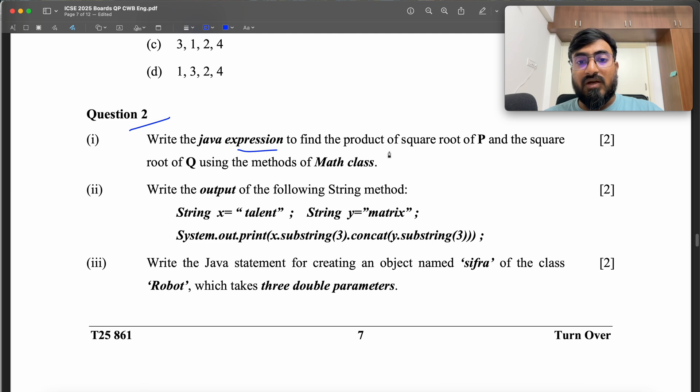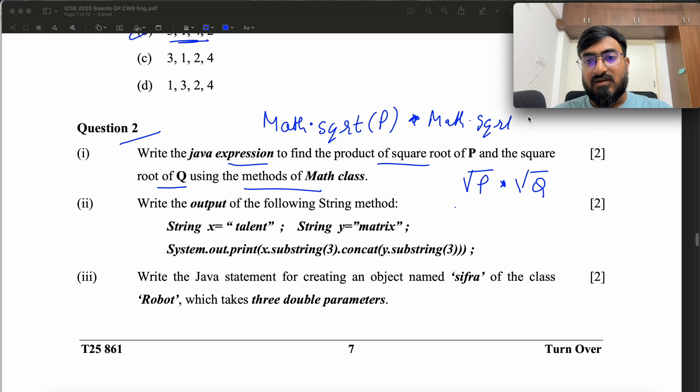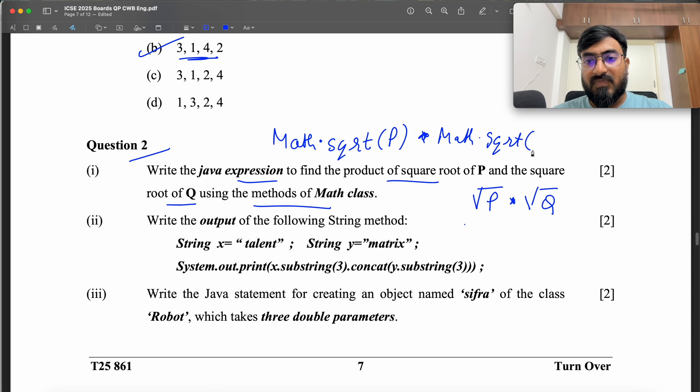It says write the Java expression to find the product of square root of P and the square root of Q using the methods of Math class. Product of square root of P and the square root of Q. You just have to add the expression, you don't have to add the statement. So Math.sqrt(p) into Math.sqrt(q).